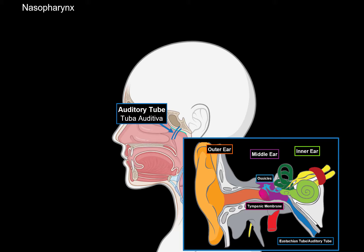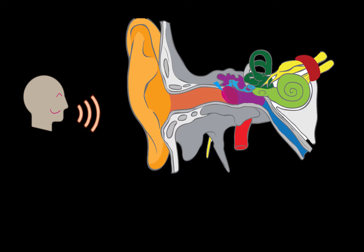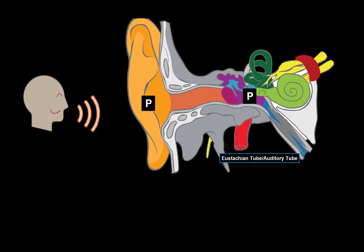Why do you need the auditory tube? As you're listening to my voice, your eardrum — the tympanic membrane — will vibrate in a specific manner. This vibration is converted into an electrical signal through the auditory pathway based on the vibration of the tympanic membrane. The tympanic membrane can vibrate because the pressure difference is stabilized. The auditory tube is the only way the middle ear can regulate its pressure. At rest, the auditory tube is always completely closed. But if you try to swallow, the auditory tube opens, and you'll feel a slight pressure relief in your middle ear, because the auditory tube opens up to relieve the pressure.